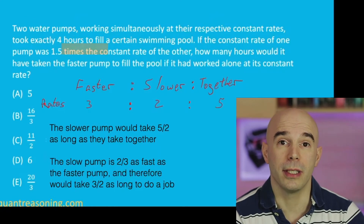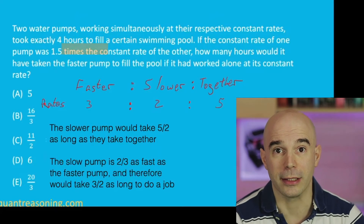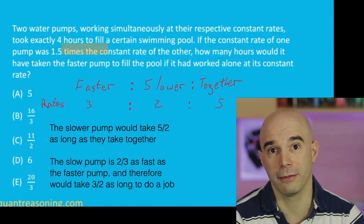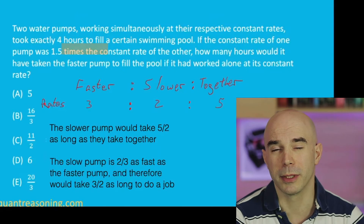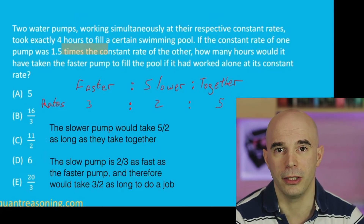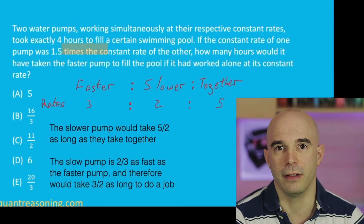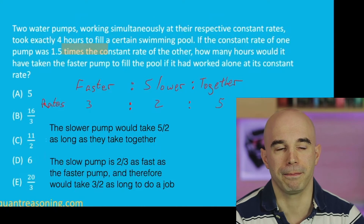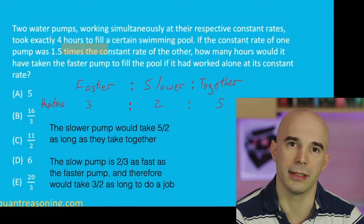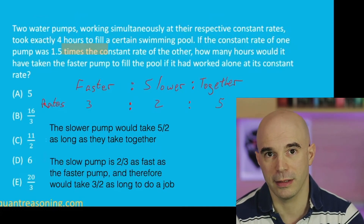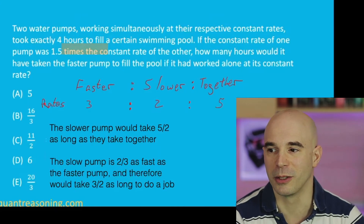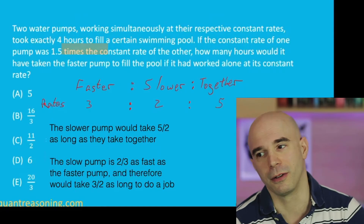I would only use percentages at the very end of a question if they're asking for a percent change. If they're not asking for a percent change, I would never introduce it myself. Percents are just not nearly as useful as ratios — we've seen that many times. If you're 50% faster, it would take you less time, but what percent less? You'd have to convert to ratios: 50% faster means three-halves as fast, so it takes two-thirds as long, meaning one-third faster — 33% faster. You can't really do that with just percents; you have to convert to ratios and then convert back.